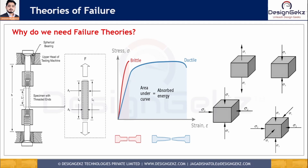For a machine part subjected to a uniaxial stress system (sigma 1), the limiting allowable stress can be obtained from the simple tension test, where the yield point stress is the deciding factor. But in the majority of cases, parts are subjected to complex stress systems. Since it is impractical to test every material under every combination of stresses (sigma 1, sigma 2, sigma 3), failure theories are needed to predict — based on tensile test data — how strong a material will be under any static loading condition.